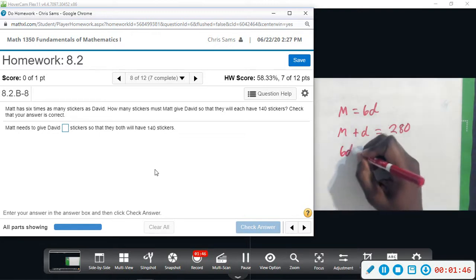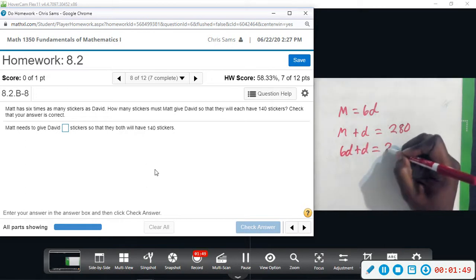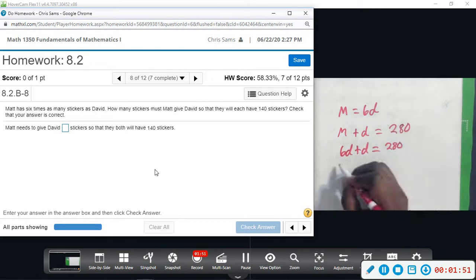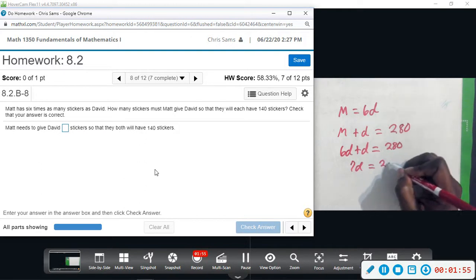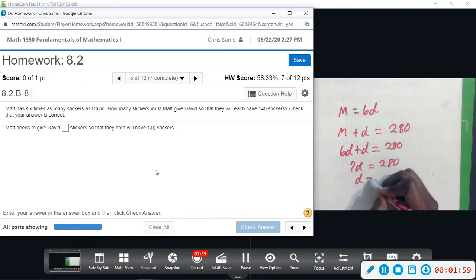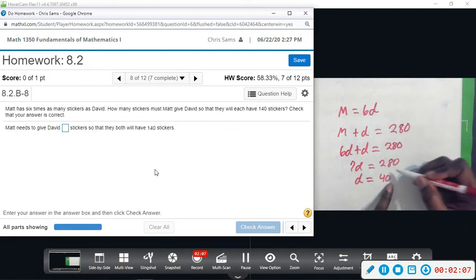And then we'll get 7D equals 280, and then divide by seven, and so we'll get D equals 40. Okay, so David has 40, and take away 40 from 280, that means Matt has 240.